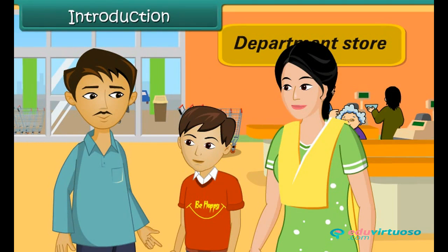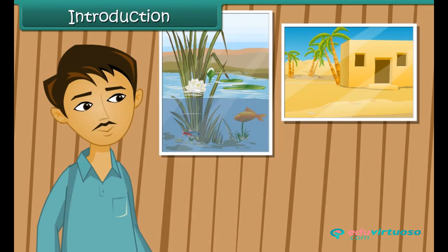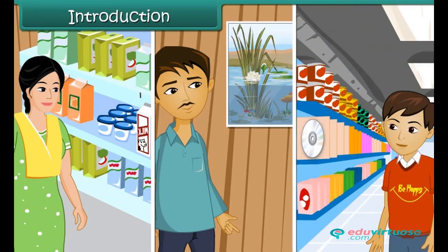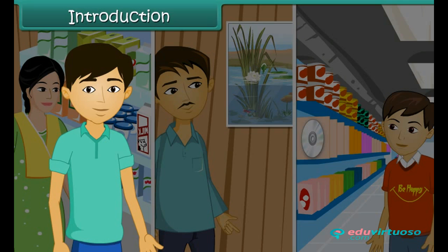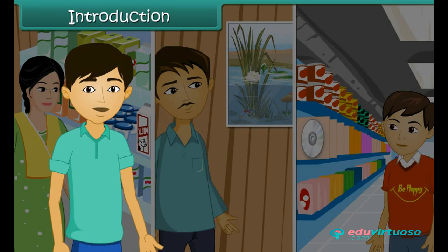You are in a department store with your parents. Your mother wants to pick up groceries, your father wants to look at some paintings, and you want some music DVDs. The three of you head in three different directions because all the objects in the store are categorized into different sections according to their types. Such organization is convenient and leads to better management.